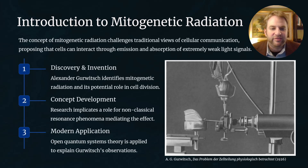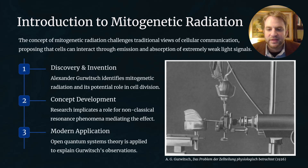Alexander Gurwitch first identified mitogenetic radiation in the 1920s and its potential role in cell division in his experiments on onion roots. In the figure shown here, we have an onion held at the top with its root extending down, and another onion to the left with the root coming forward so that the tip of the emitter root sits facing the side of the so-called receiver root. In this setup, it was found that cells on the side of the receiver root facing the tip divided more rapidly than cells on the opposite side.